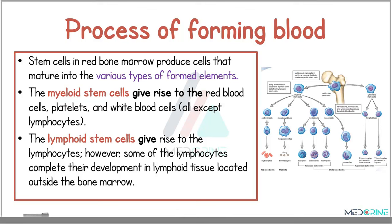The myeloid stem cells give rise to the red blood cells, platelets, and white blood cells — all except lymphocytes. On the other hand, the lymphoid stem cells give rise to the lymphocytes. However, some of the lymphocytes complete their development in lymphoid tissues located outside the bone marrow, for example the thymus.